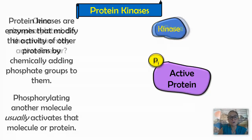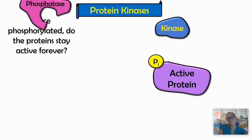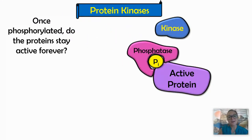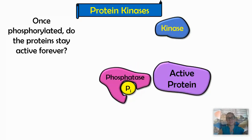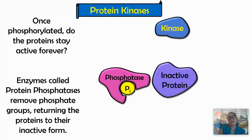These proteins don't stay active forever — we also need to dephosphorylate them. That's where another enzyme called protein phosphatase comes in. Protein phosphatase removes phosphate groups, returning proteins to their inactive forms.